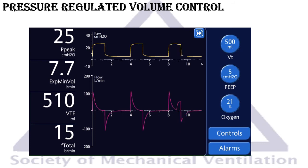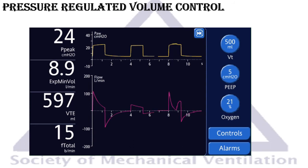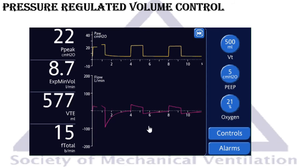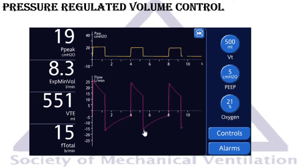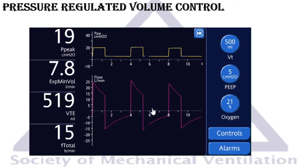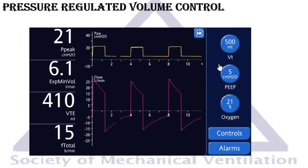Now let's see the change in resistance. Increasing resistance causes the flow waveforms to become smaller and the time constant to slow, so it does not decelerate as quickly. The ventilator responds the same way — since tidal volume went up, it starts decreasing airway pressure to reach the target of 500 mL.